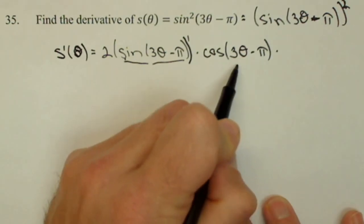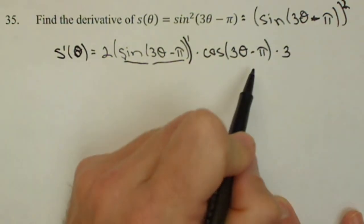Now times the derivative of the inside of this, which is 3, and now we're done.